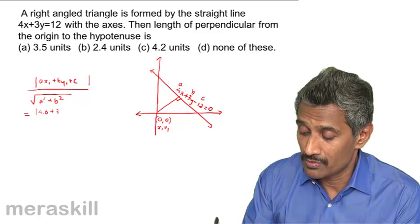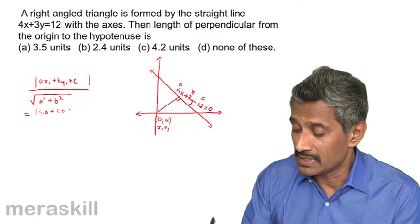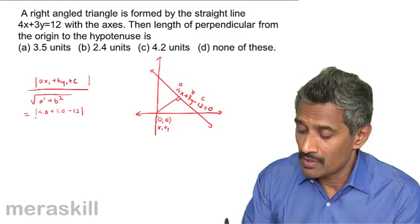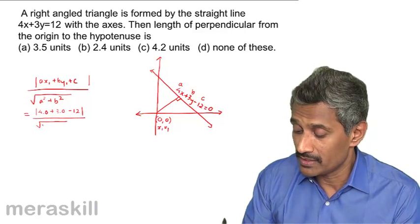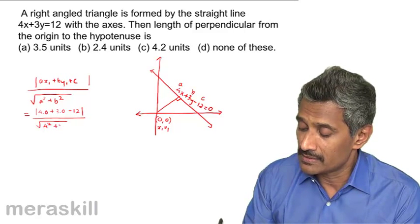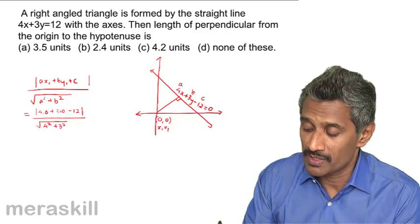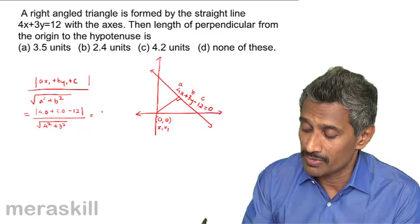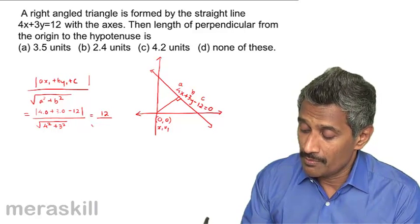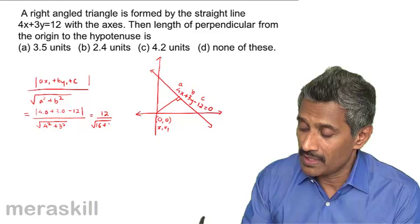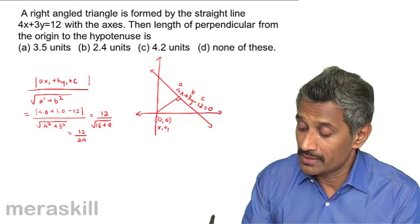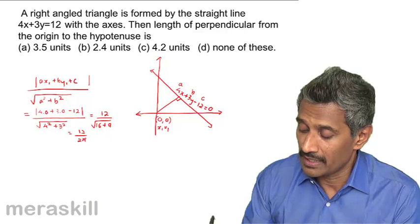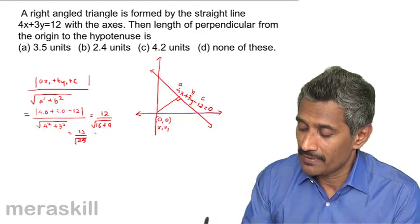A squared is 4 squared plus 3 squared. This becomes 0 plus 0 minus 12, which is 12 upon square root of 16 plus 9. That's 12 upon square root of 25, which is 12 by 5.